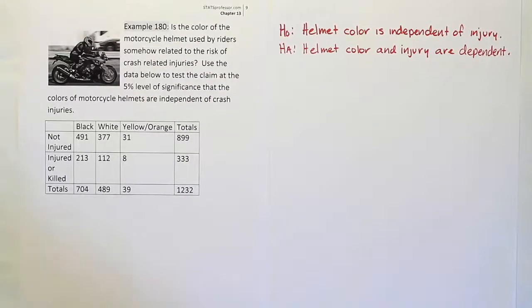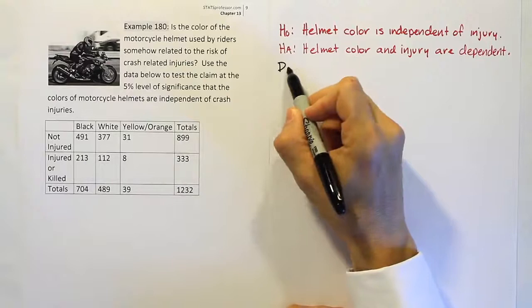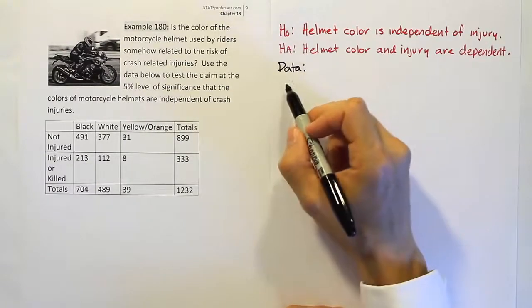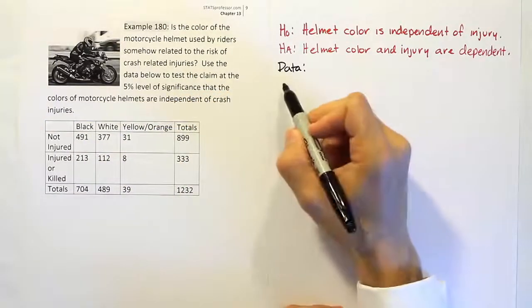From there, our next step is to get the data worked out. What we mean by data in a chi-squared test is to come up with the expected values. We're going to do that as our next step. To do the expected values, we go one by one for each cell and try to figure out those expectations.